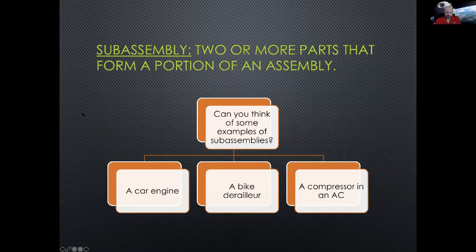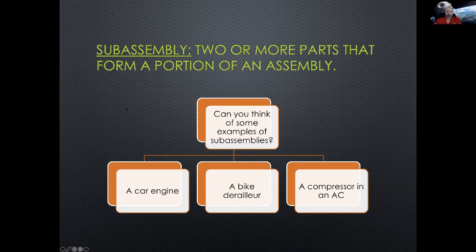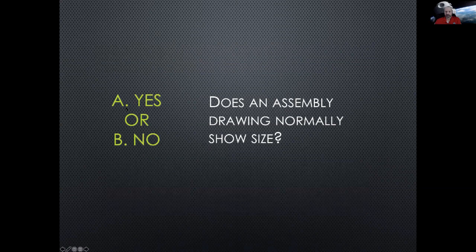Think about when you would want sub-assemblies and when you wouldn't. It's all about making everything clear so that the people who manufacture and assemble your designs do it correctly and efficiently. A sub-assembly is two or more parts that form a portion of an assembly — a car engine would be a sub-assembly to a car, and a bike derailleur has multiple parts and would be drawn up as a sub-assembly to the bike.